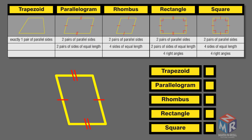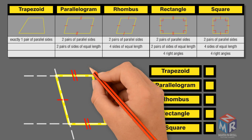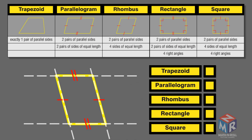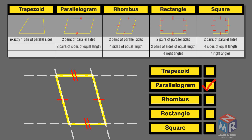Let's take a look at another quadrilateral. It is not a trapezoid because it has two pairs of parallel sides. It is a parallelogram because it has two pairs of parallel sides and two pairs of sides that are equal in length. It is not a rhombus because the sides are not equal in length. It is not a rectangle because it does not have four right angles. It is also not a square because it does not have four sides that are equal in length and four right angles.